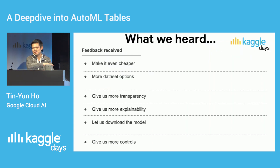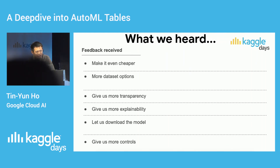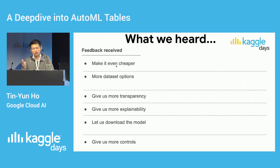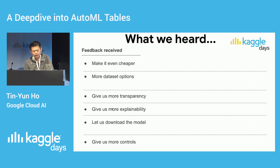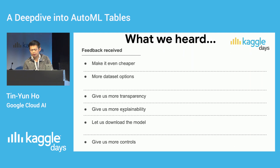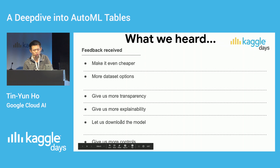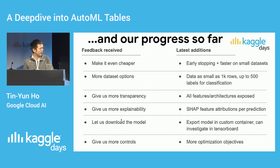That was the launch announcement in April. Since then, what we've heard from many users, including Kagglers, is that you want several things: you want it to be even cheaper, you want it to cover more dataset types and options, you want more transparency into the model, more explainability — what's the reason the model is making this prediction — you want to be able to download the model and run it somewhere else, and you want more controls over the overall training system. So here's what I'm here to announce today.